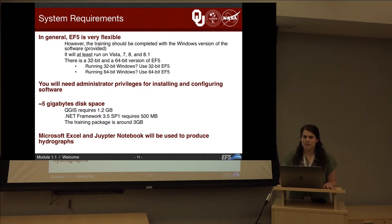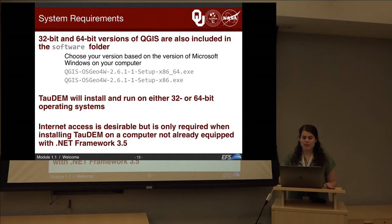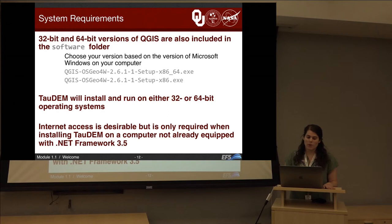To show the results we get, you'll need Microsoft Excel, and we'll use Jupyter Notebook via the Internet to produce hydrographs. Both 32-bit and 64-bit versions of QGIS are included in the software folder, so you can choose based on your computer's needs. TauDEM will install and run on either 32 or 64-bit. Internet access is desirable but only required when installing TauDEM on a computer not already equipped with .NET Framework 3.5, or if you want to produce hydrographs through Jupyter Notebook.